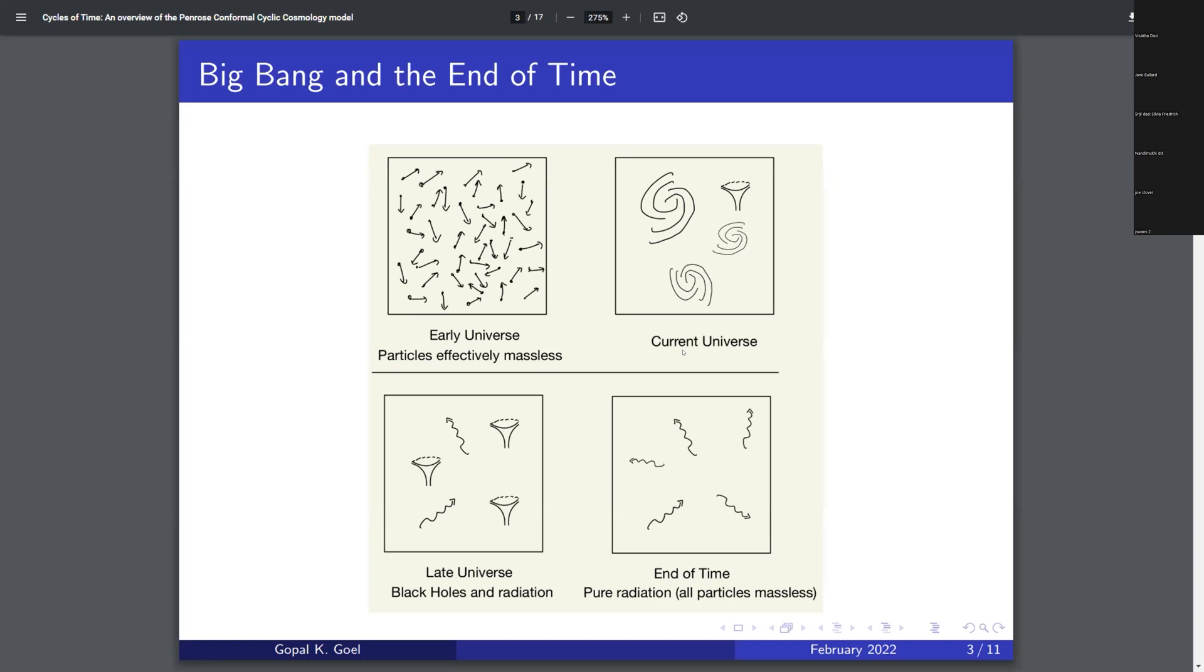And after this early stage, eventually matter coalesces and you get protons and all these particles, and eventually you get stars and galaxies. So I've drawn a little sketch here where you have some galaxies, and maybe you have a couple of black holes as well. This is supposed to represent a black hole. This is just a sketch.